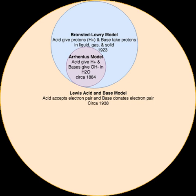The Bronsted-Lowry model calls hydrogen-containing substances acids. Thus, some substances which many chemists considered to be acids, such as SO3 or BCl3, are excluded from this classification due to lack of hydrogen. Gilbert N. Lewis wrote in 1938: 'to restrict the group of acids to those substances that contain hydrogen interferes as seriously with the systematic understanding of chemistry as would the restriction of the term oxidizing agent to substances containing oxygen.' Furthermore, CO and KNH2 are not considered Bronsted bases, but rather salts containing the bases O− and NH2−.